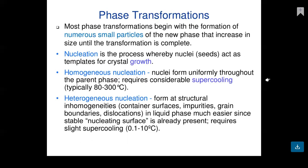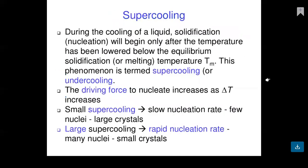Heterogeneous nucleation forms at structural homogeneities — container surfaces, impurities, grain boundaries, dislocations — in the liquid phase. It is much easier since a stable nucleating surface is already present, requiring slight supercooling of only 0.1 to 10 degrees Celsius. Supercooling occurs when nucleation begins only after the temperature has been lowered below the equilibrium solidification or melting temperature TM. The driving force to nucleate increases as delta T increases.